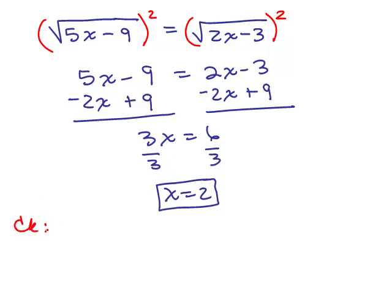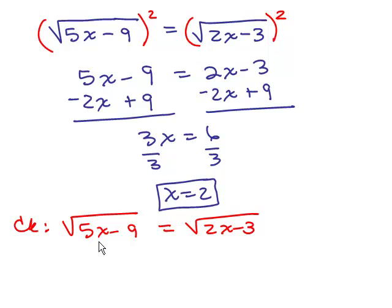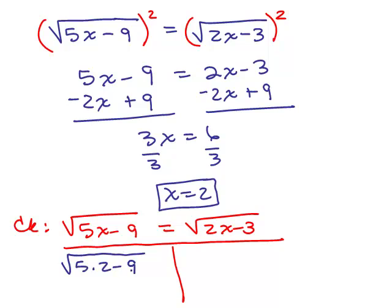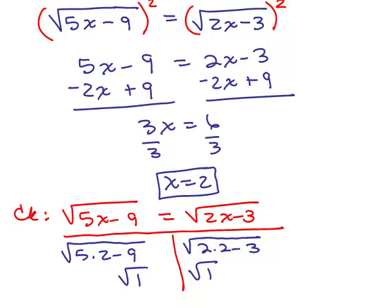We want to make sure x equals 2 checks. In the original: square root of 5x minus 9 equals square root of 2x minus 3. Plugging in 2 for x on the left: 5 times 2 minus 9 is 10 minus 9, which is 1, so we get square root of 1, which is 1. On the right: 2 times 2 minus 3 is 4 minus 3, which is also square root of 1, equaling 1. Both sides equal 1, so x equals 2 is the correct solution.